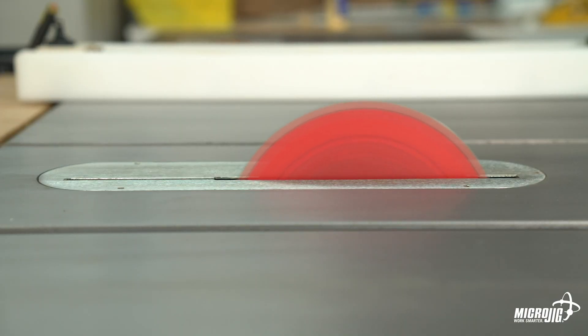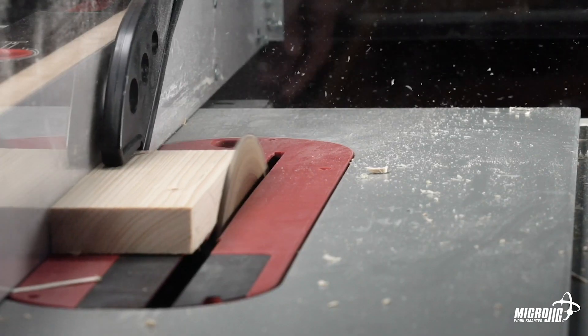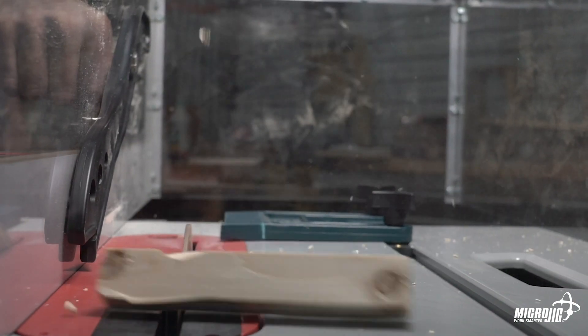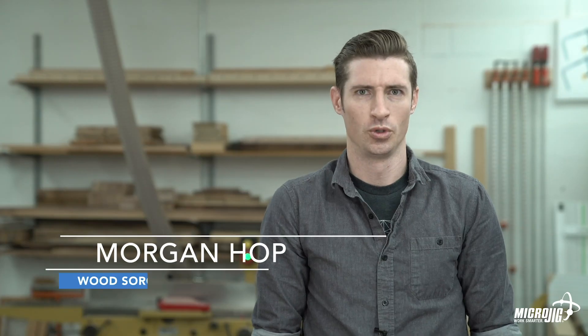Many older table saws don't have a riving knife, an essential safety feature for preventing kickback. Yikes.